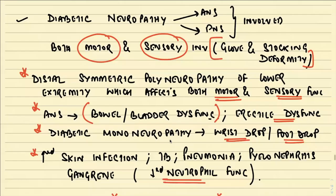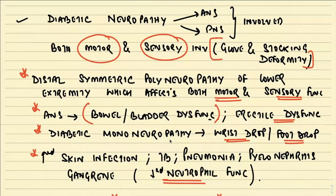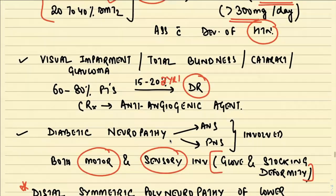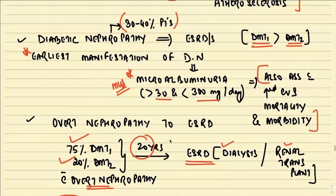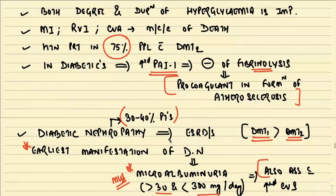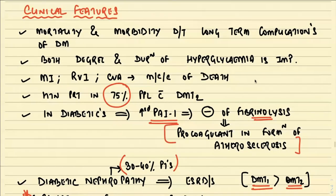Another student asks why microalbuminuria is associated with increased hypertension. The explanation: if the renal vessel lumen becomes narrowed because of deposition, hypertension will correspondingly develop — a simple logic of narrowed vessel leading to increased pressure.